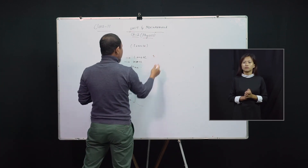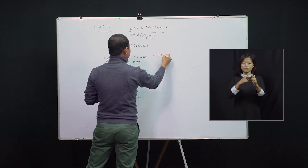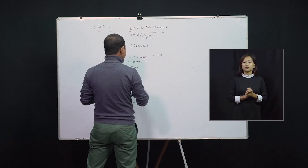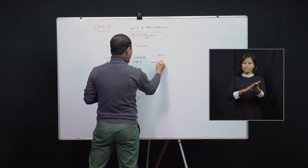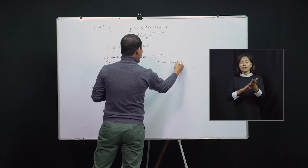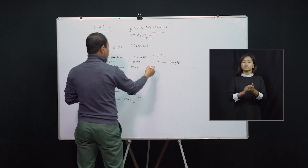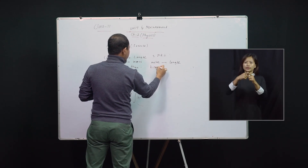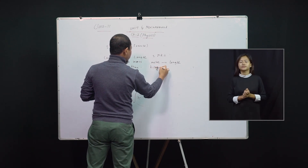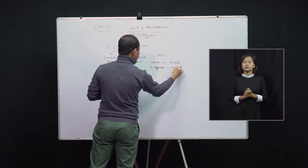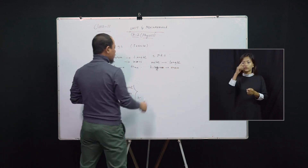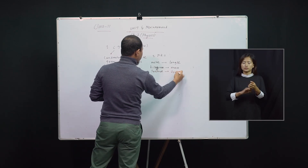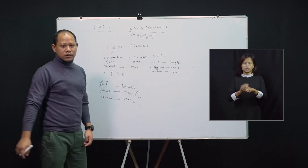The third system is MKS, where M stands for meter, used for length; K stands for kilogram, used for mass; and S stands for second, used for time. These were the three systems of units that different countries were using.